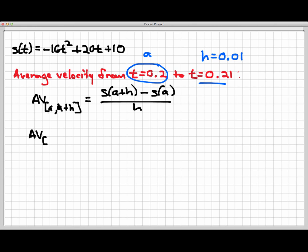And now I have enough information to put into my formula here. So the average velocity from 0.2 to 0.21 is going to be s of a plus h, which is 0.21, minus s of a, which is 0.2, and this is all divided by h.